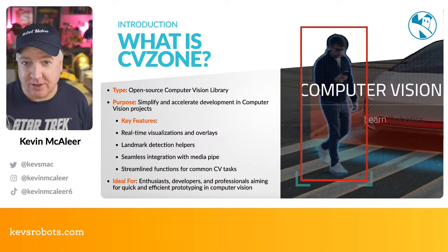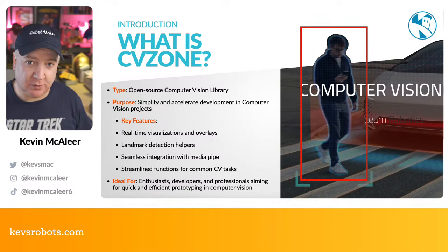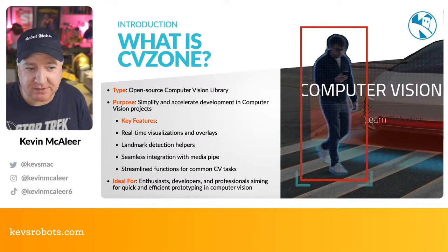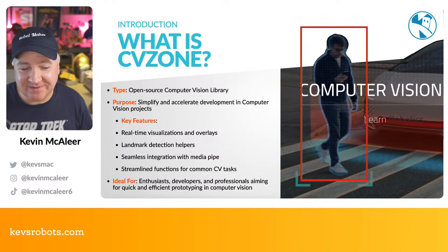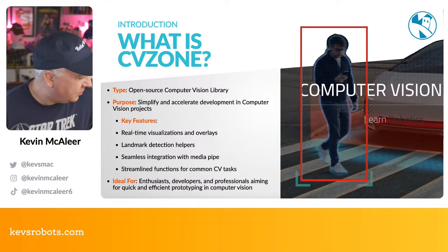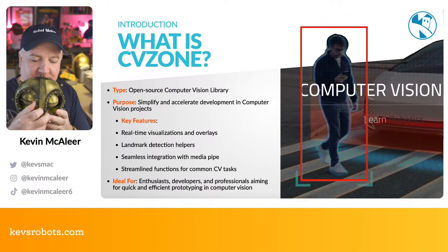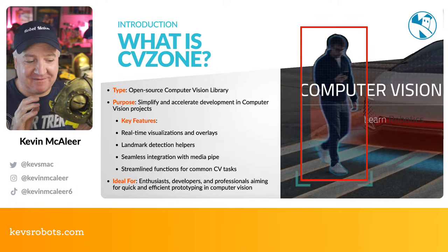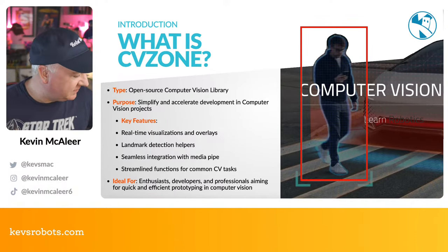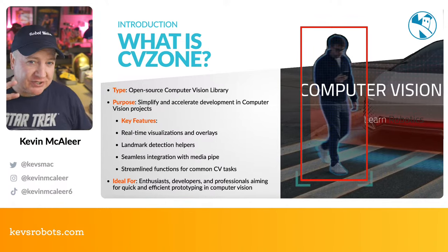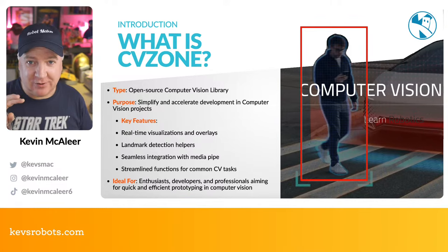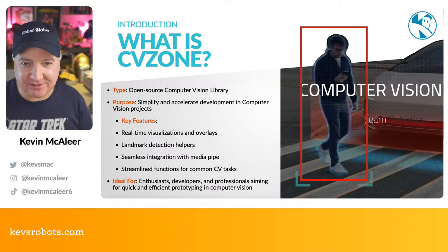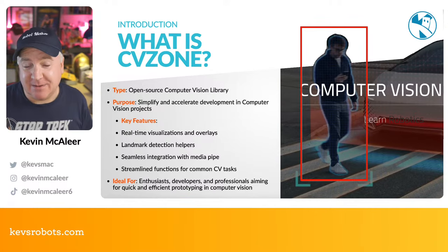So what is CVZone? CVZone is part of the OpenCV library - it's a package you can install to do all kinds of computer vision. It's part of the open source computer vision library, OpenCV, and it helps simplify and accelerate your development in computer vision projects. I've used this on Bubo - he's undergoing a renovation and will soon have a new Raspberry Pi 5. The project lets you put a hand gesture in front of Bubo, count the fingers, take a picture, and tweet it out.